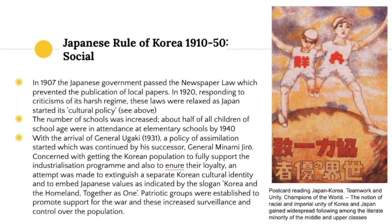Socially, in 1907 the Japanese government passed a newspaper law restricting local Korean publications. In 1920, responding to criticisms of the harsh regime, these laws were relaxed as Japan introduced its cultural policy. The number of schools was increased, with about half of school-age children in attendance at elementary school by 1940. By 1931, policy shifted from the heavy militarist approach of the 1910s and 1920s toward a policy of assimilation.